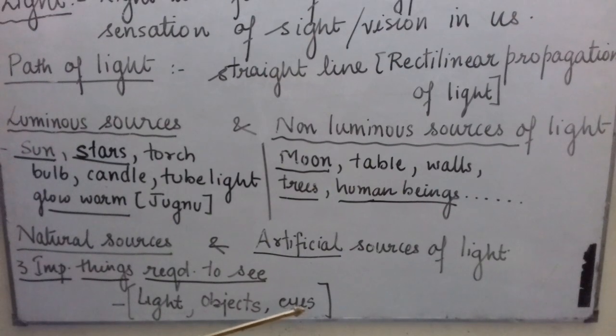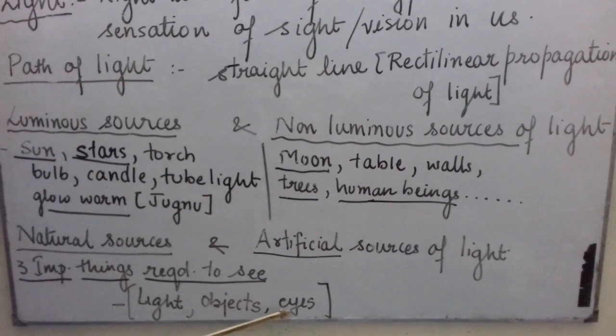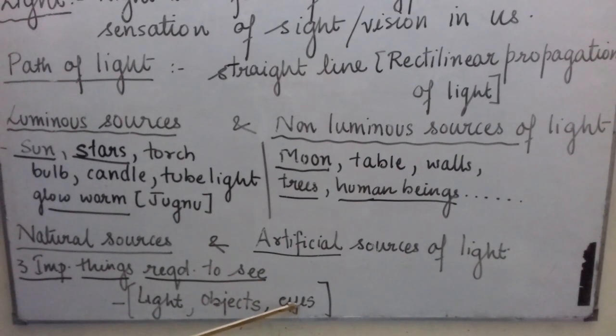Eyes. If a person is blind, obviously, even in the presence of light and object, he or she will not be able to see anything.